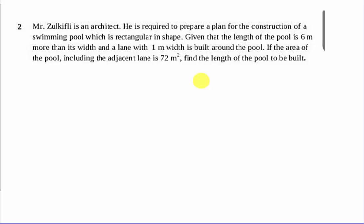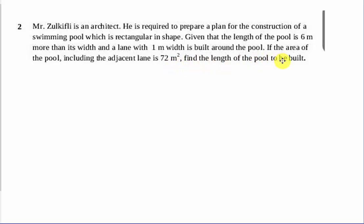The question says: Mr. Juggie Free is an architect. He is required to prepare a plan for the construction of a swimming pool which is rectangular in shape. Given that the length of the pool is six meters more than its width, and a land with one meter width is built around the pool, if the area of the pool including the adjacent land is 72 square meters, find the length of the pool.